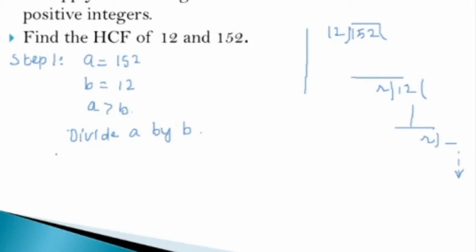Second step I have to do the division and by simple division I know that 152 can be written as 12 into 12 plus 8, right? And this is what is Euclid's lemma. So applying here I am applying Euclid's lemma.